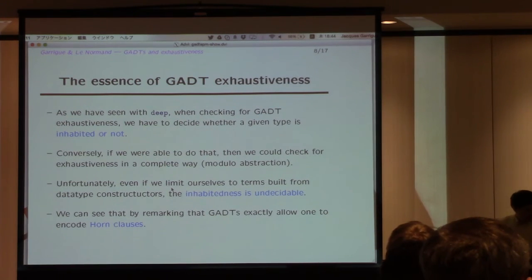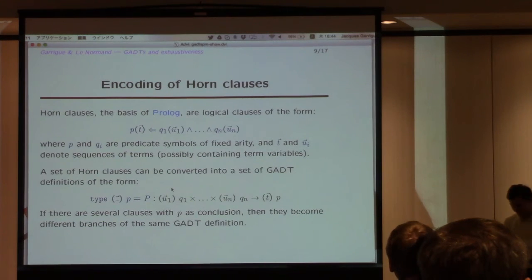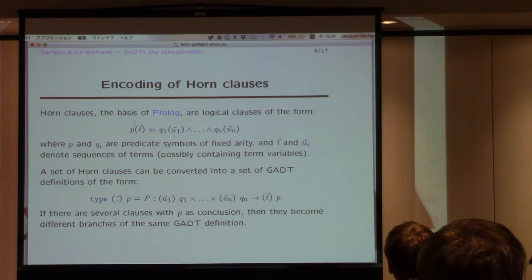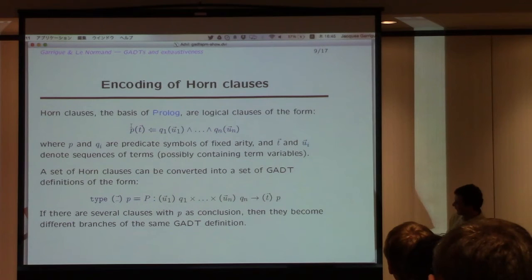Actually, it is. And they appear to be equivalent, actually. So, what are Horn clauses for people who have no Prolog background? So, the basis of Prolog. Basically, there are predicates. Your predicate is defined, so you have an implication. So P of T is defined if all these conditions are satisfied. You could have several clauses for the same P. And usually what you do in Prolog is that you check the clauses one by one to know whether it's possible, whether it's true or not.